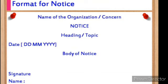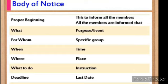Then the body of the notice should be written: to whom we are informing, what we are informing, when the event is going to happen, who is going to participate, and who is the chief guest — all these things should be written in the body of the notice. The body should not exceed 50 words. On the left side, write the signature, name, and designation of the person issuing the notice.